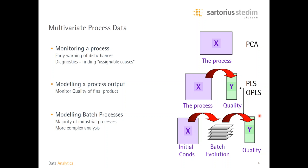An even more complex data architecture arises when modeling batch processes. With batch processes you have a two-way data table for initial batch configuration, process outputs such as quality or yield after batch completion, and additionally a three-way data structure of process evolution measurements made throughout the batch lifetime. This three-way array — with dimensions of batches, time, and variables — is the particular data arrangement we focus on in this presentation, and it is fully possible to analyze using SIMCA offline software.